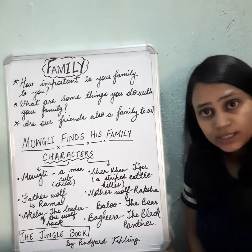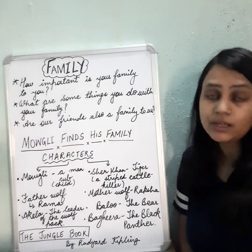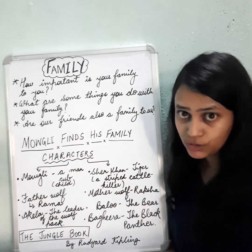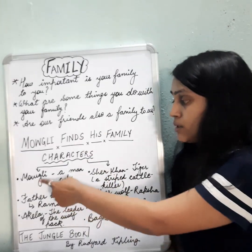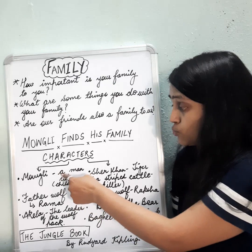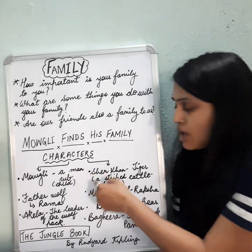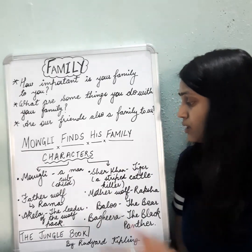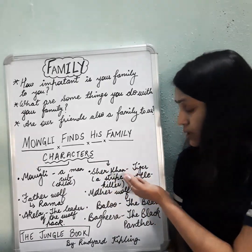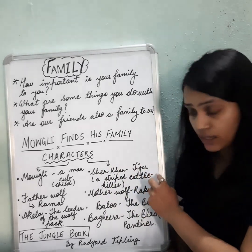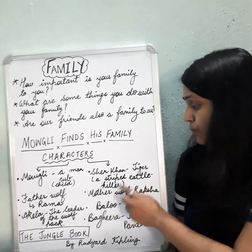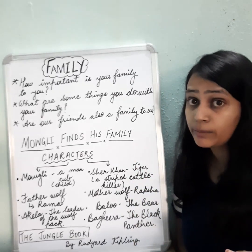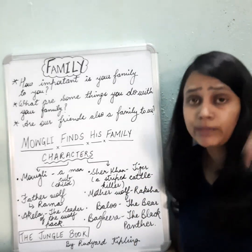Before we start with the chapter 'Mowgli Finds His Family,' I want all of you to know about the main characters of the story. The main character of the story is Mowgli, who is referred to as a man-cub. And why do we call him a cub? Because he is a small child. Second, we have Sher Khan, who is a tiger and is mentioned as a striped cattle killer.